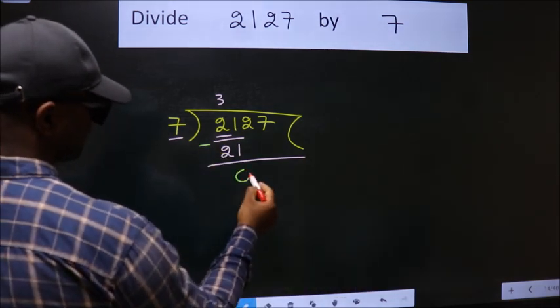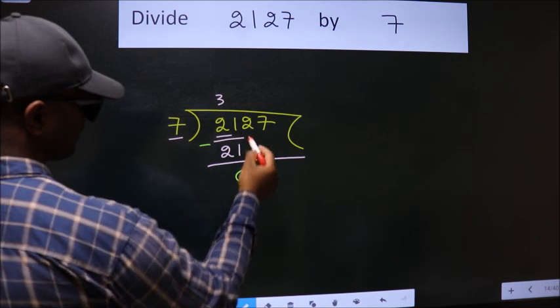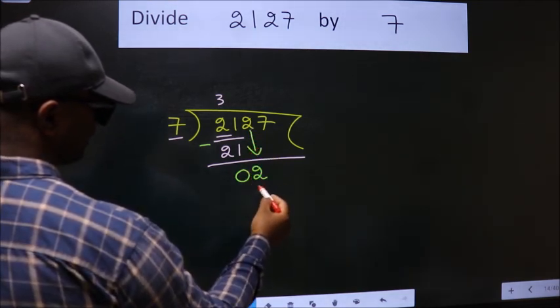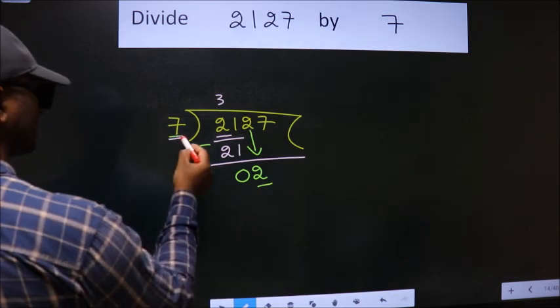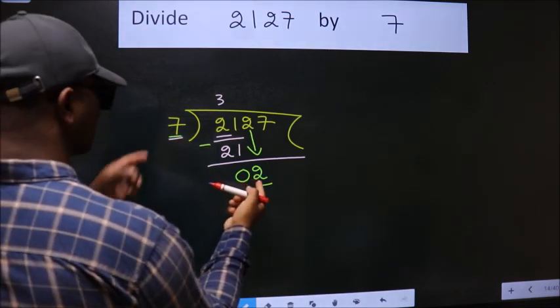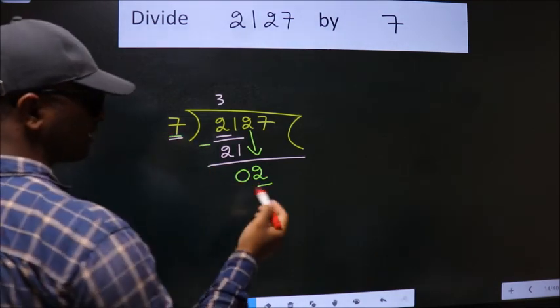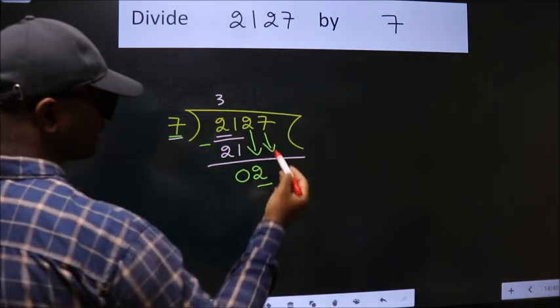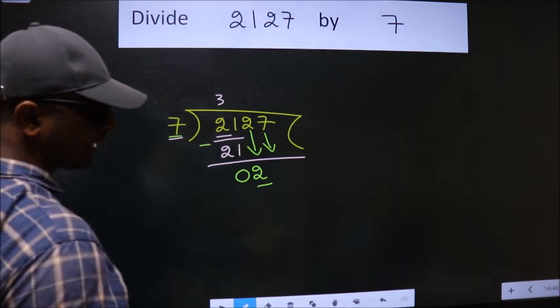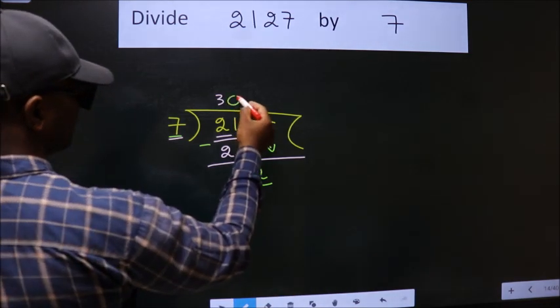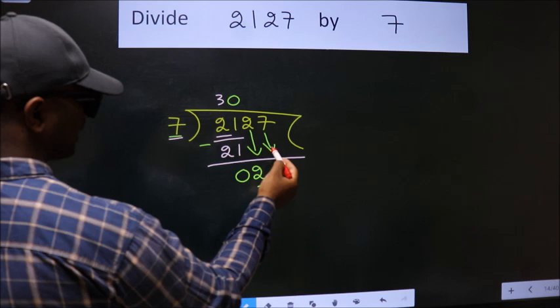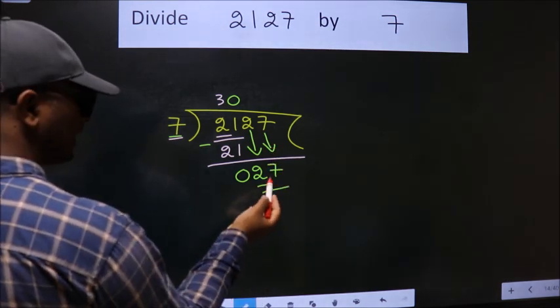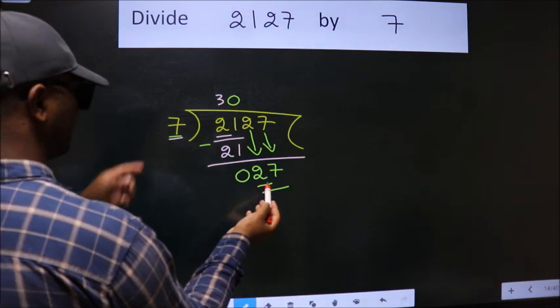After this, bring down the beside number, so 2 comes down here. We have 2 here. 2 is smaller than 7, so we should bring down the second number. The rule to bring down the second number is put 0 here, then only we can bring down this number. So 27. A number close to 27 in the 7 table is 7 times 3 is 21.